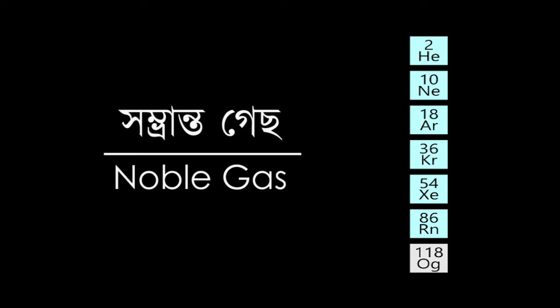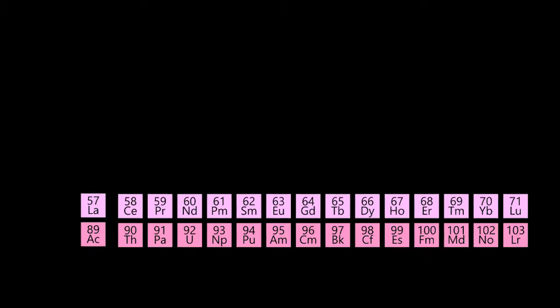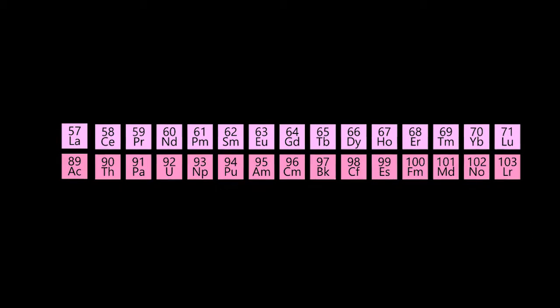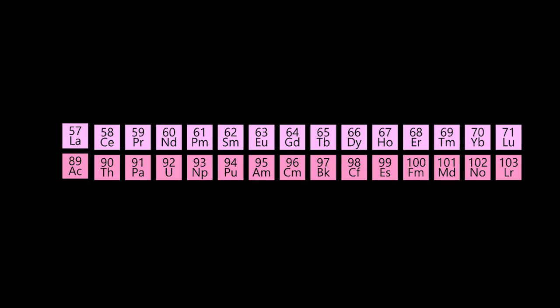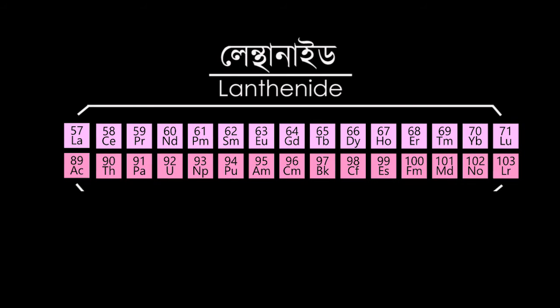Now students, you must have noticed two separate rows at the bottom of the periodic table. The first row elements are called lanthanides and the second row elements are called actinides.